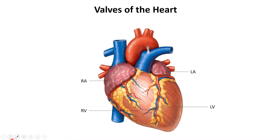The red vessel at the top is the aorta and the one in front of it is the pulmonary trunk. Please note that the pulmonary trunk is anterior to the aorta and both of these great vessels are located between the right and the left atriums.